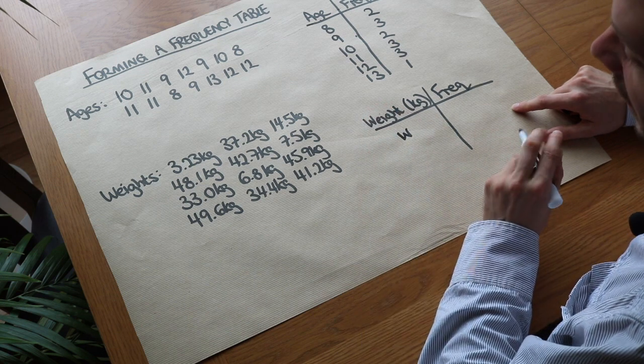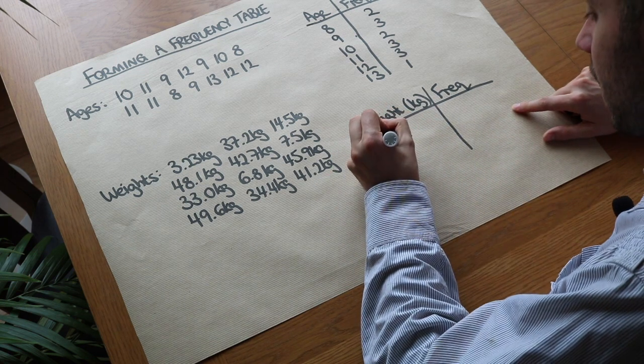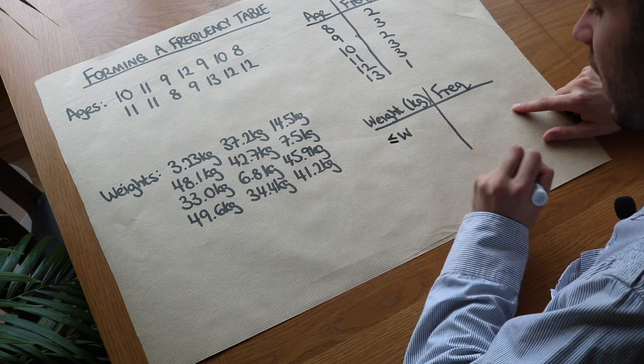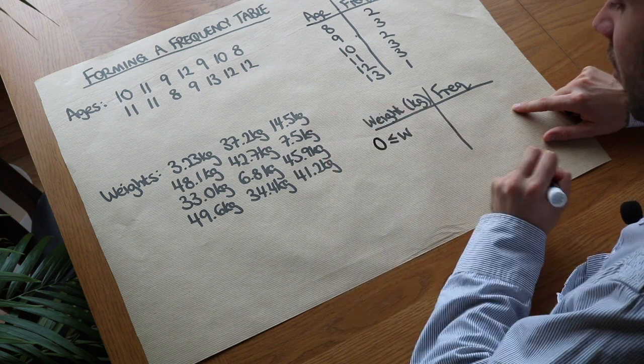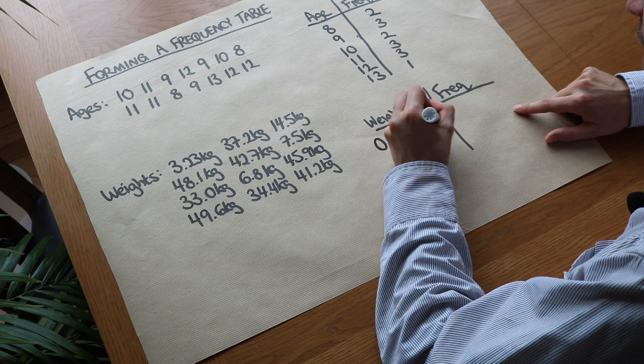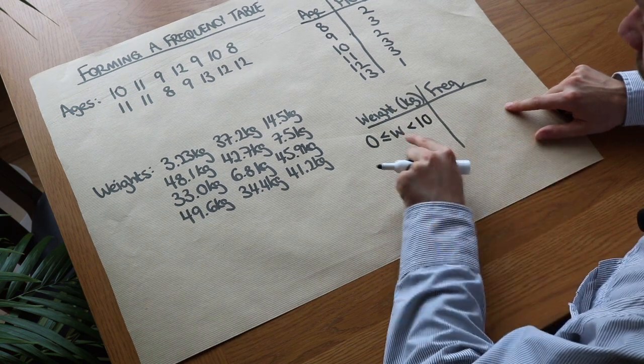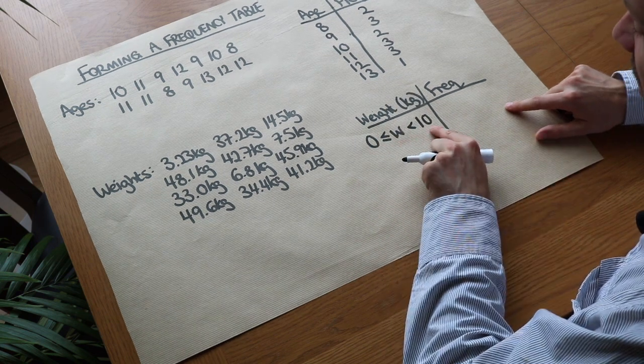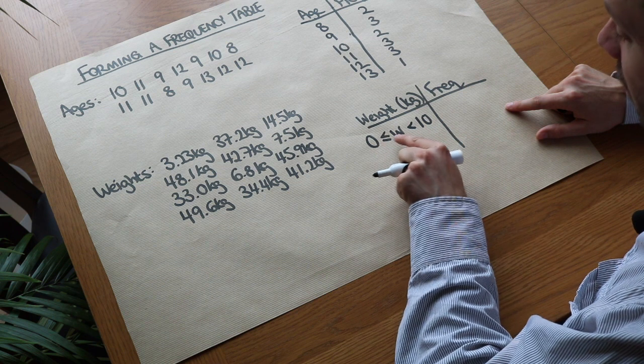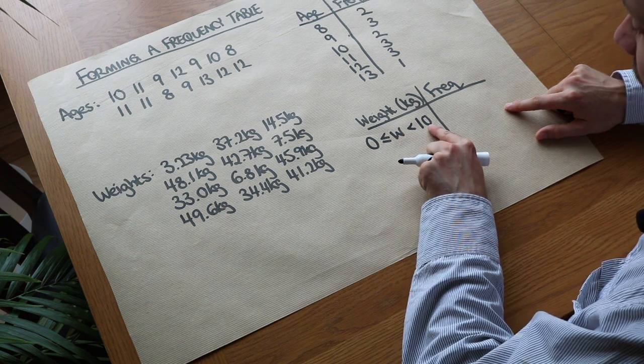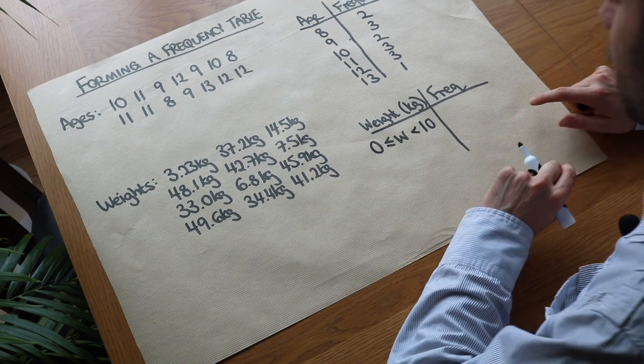Now the way we could represent an interval zero to ten is to say that W the weight is greater than or equal to zero kilograms but less than ten kilograms. And what that means is the weight is between zero and ten including zero but not including ten kilograms because the weight is strictly less than ten kilograms.